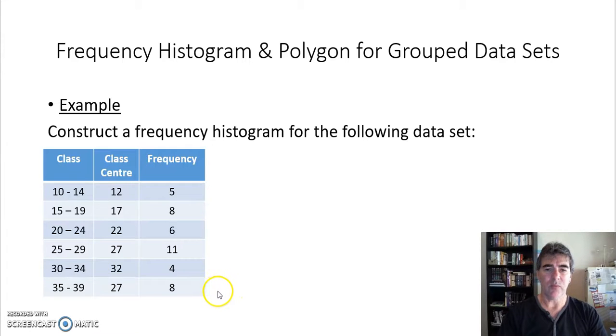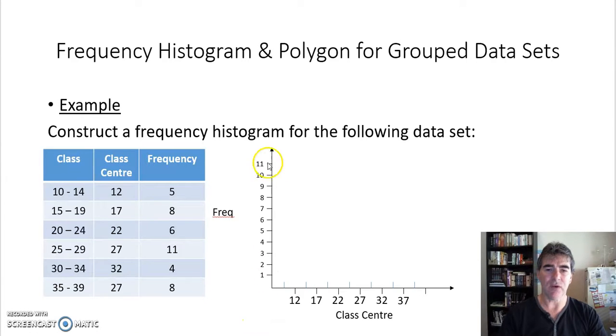So now that we've completed that, we're going to construct our frequency histogram. So we need a horizontal axis and a vertical axis in very much the same manner we did before, except our horizontal axis is our class center, which is our 12, 17, 22 that we found over here. And our highest frequency is 11, so again we only need to go up to 11. Our class center of 12 has a frequency of 5, so 12 has a frequency of 5.